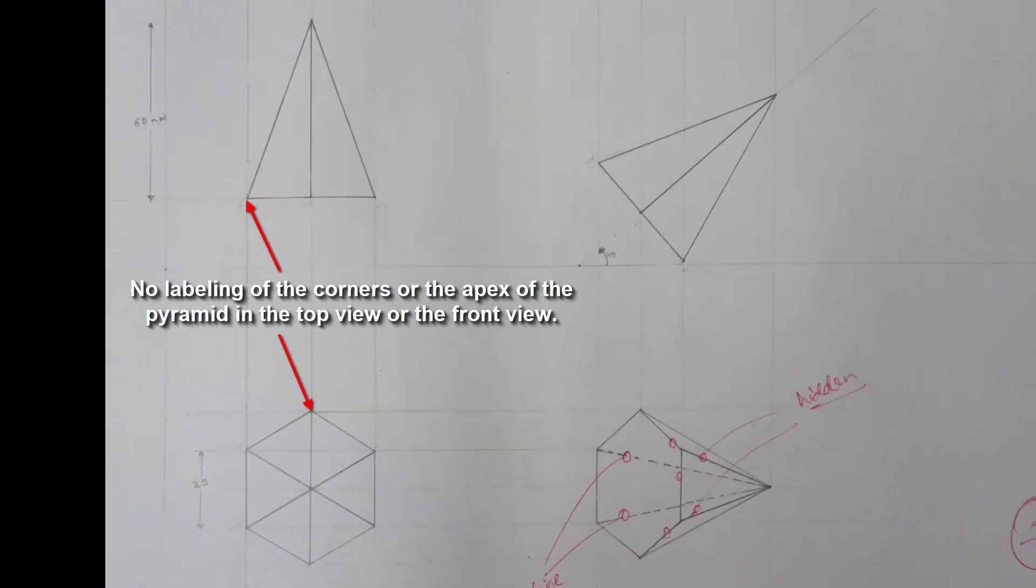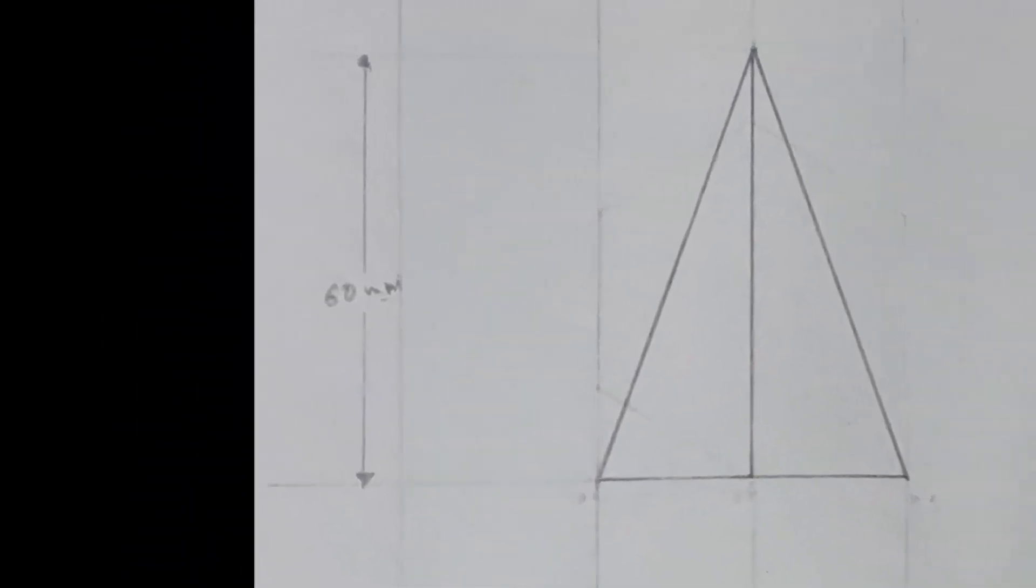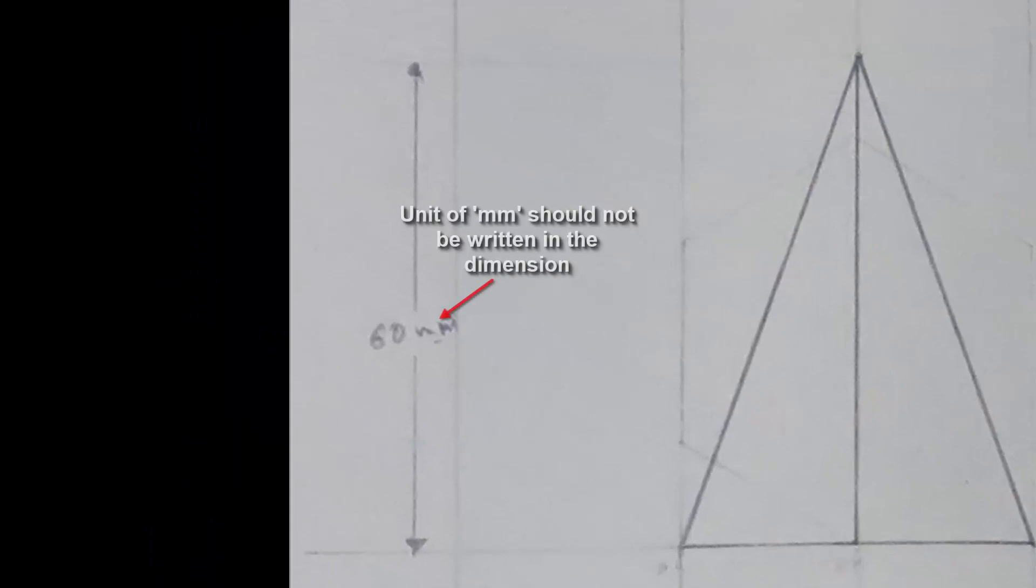In this drawing no labeling of the corners or the apex of the pyramid in the top view or the front view. The unit of mm should not be written in the dimension. Only the numbers are written. So here it should be only 60.